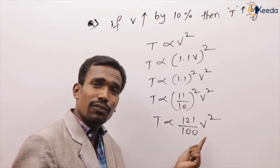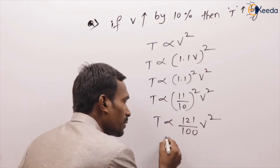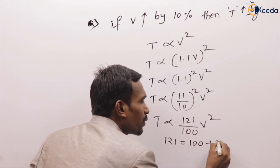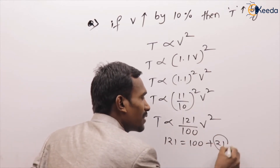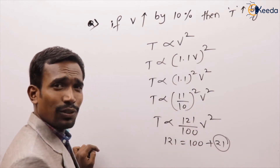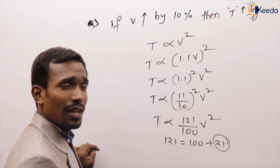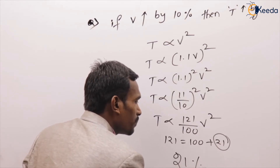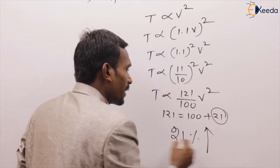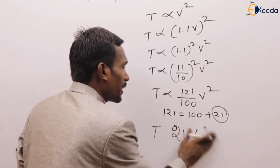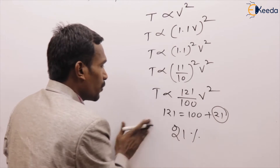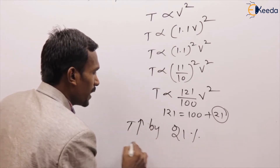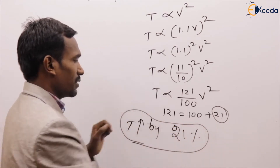121% of V squared means 100 plus 21. So the torque increased by 21%. The correct answer is torque increased by 21%.